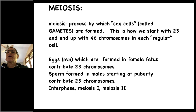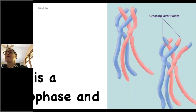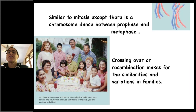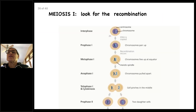Meiosis is similar to mitosis, except there's a chromosome dance between prophase and metaphase. Looking carefully, you can see crossing over and mixing and matching — those chromosomes are no longer exactly like they were at the beginning. The purple one has some pink on it; the pink has some purple. This crossing over, or recombination, makes for the similarities and variations in families. You don't look exactly like your sibling — you share some genes and physical traits with parents and relatives, but thanks to meiosis, you're a unique individual.